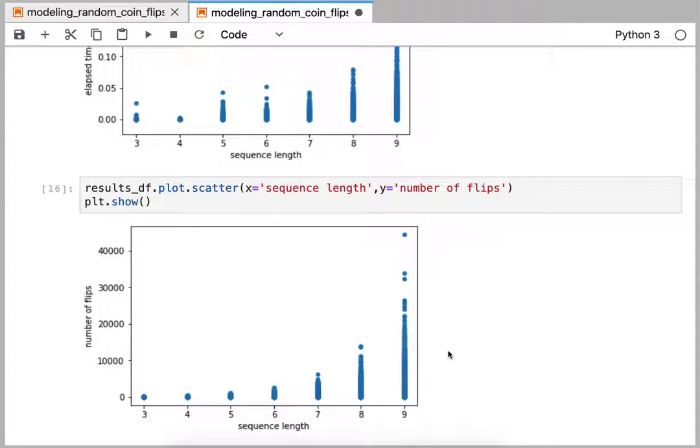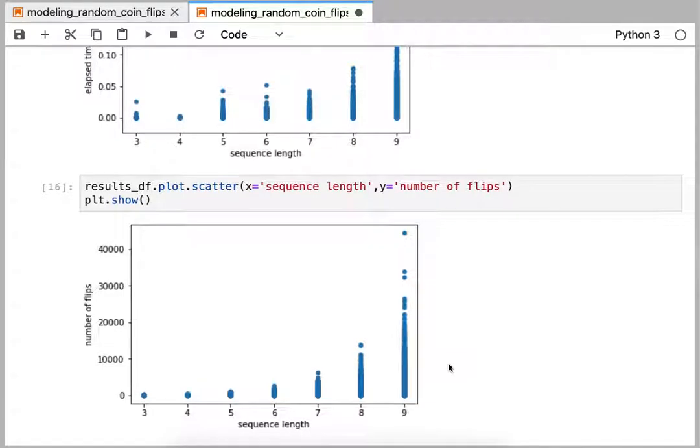But again, the scatter plot, although it does show the data, it's not very clear about what's the average. Like these are clearly outliers, but what's the average number of flips that it would take?